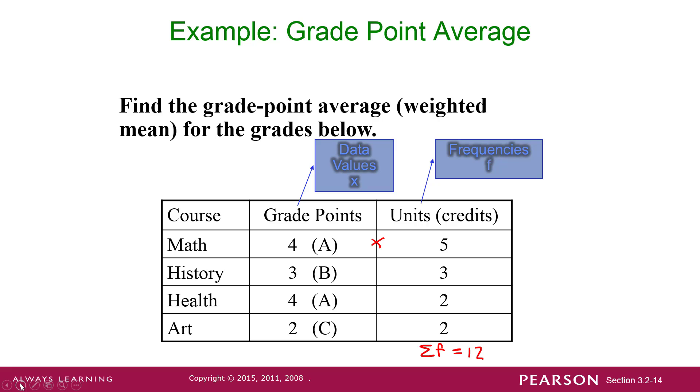So this person has an A in math, a B in history, an A in health, and a C in art. The math is worth 5 credits, history is worth 3 credits, health is worth 2 credits, and art is worth 2 credits.